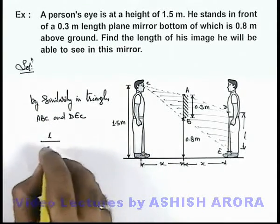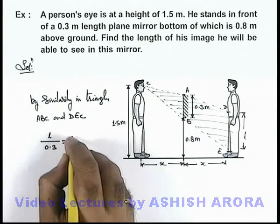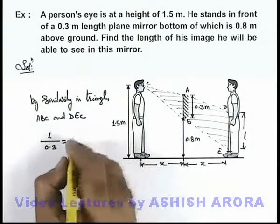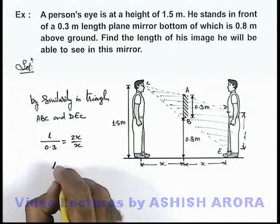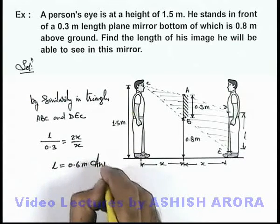This distance is 2x, so this will be 2x by x. So here the value of l we are getting is 0.6 meters. That'll be the answer to this problem.